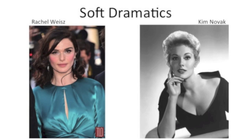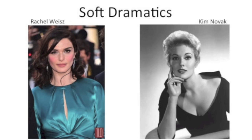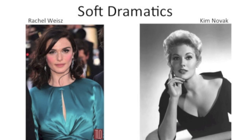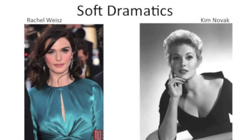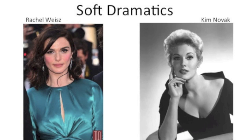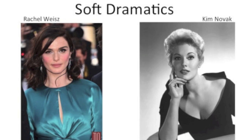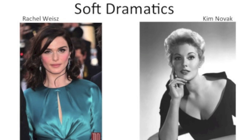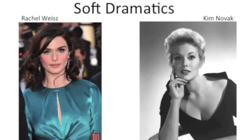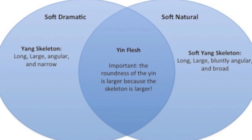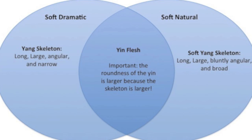Now let's talk about soft dramatic: how can they wear other lines to achieve a different look? We're going to talk about Rachel Weisz and Kim Novak, both soft dramatics on Kibbe's list. Thinking back to what we discussed about dramatic wearing flamboyant natural, what would you predict for the soft dramatic to look more dainty? I think that if the soft dramatic wears soft natural lines, they will look quite small and dainty.